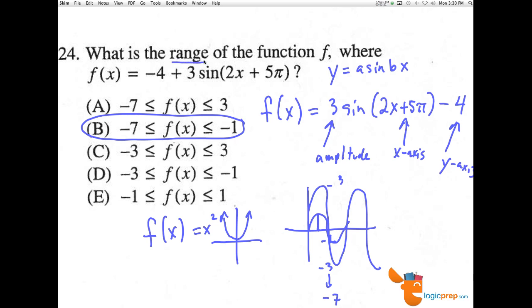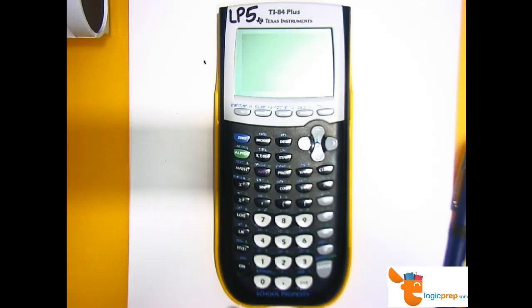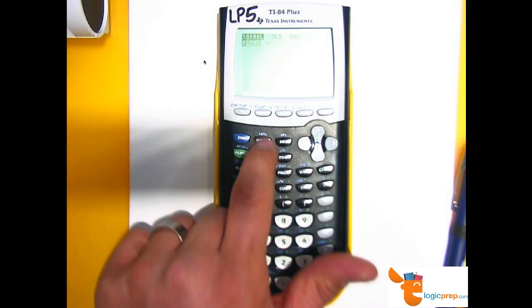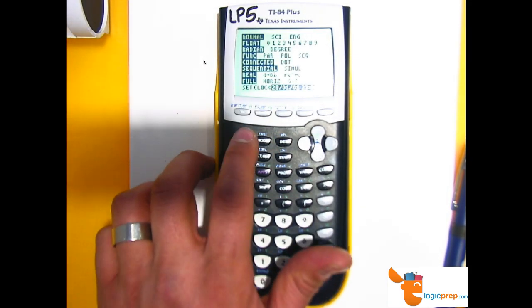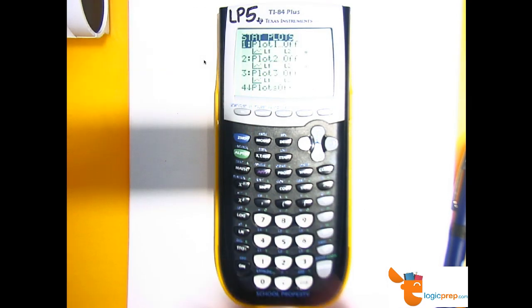Now we can put our calculator in radians and graph this. So I'm going to go ahead and do so. By going to y equals, I'm going to choose the mode and make sure that I'm in radians and I am. And now I'm going to go ahead and graph this.